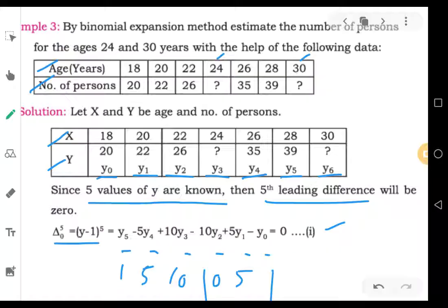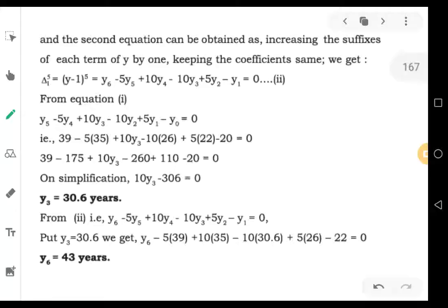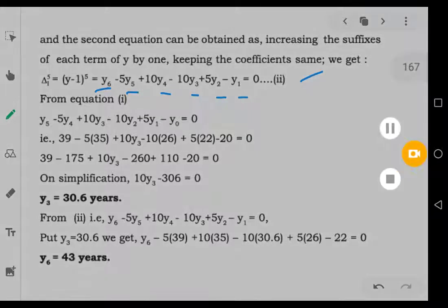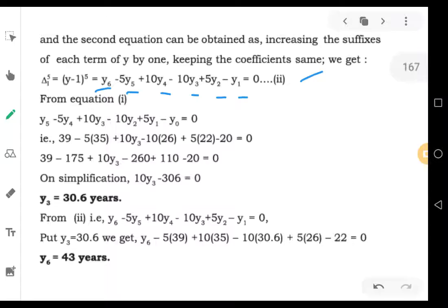This will be your second equation. First equation, we have taken, we have started our elements from y5. So, if you take from y6, it will be y6, y5, y4, y3, y2, y1. So, the same leading differences of 5, 1, 5, 10, 10, 5, 1, and 1. We will count as minus plus. That will be your second equation.